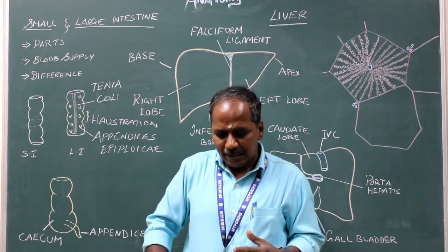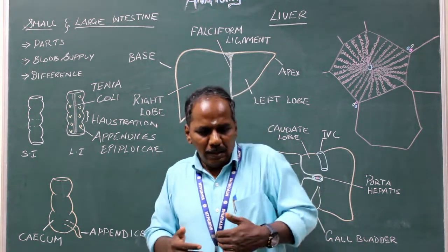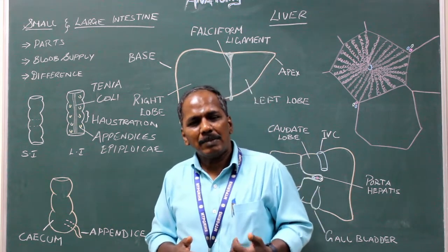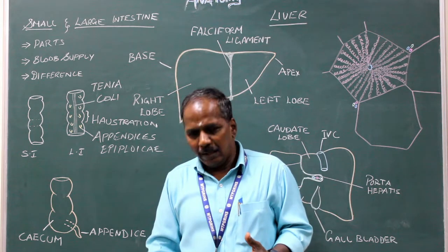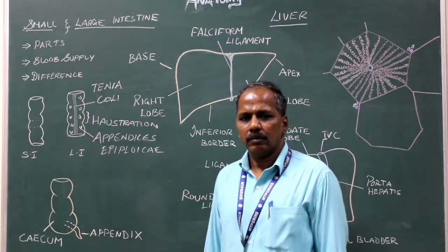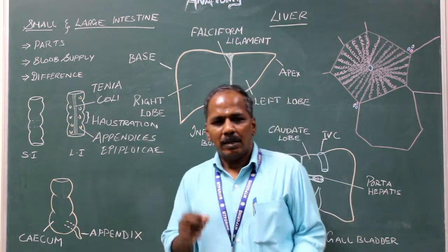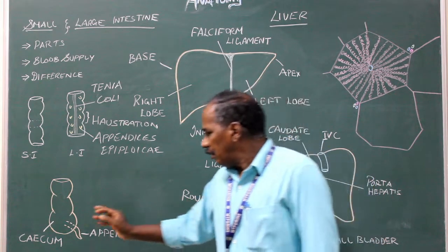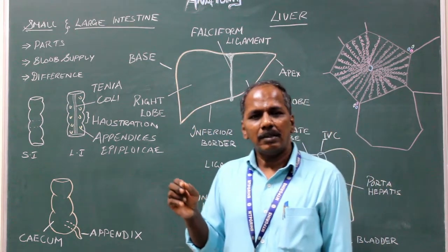Blood supply of the large intestine: the cecum, appendix, ascending colon, and right two-thirds of the transverse colon are supplied by the superior mesenteric artery. The left one-third of the transverse colon onwards is supplied by the inferior mesenteric artery. The appendix is a diverticulum which extends from the posteromedial aspect of the cecum.